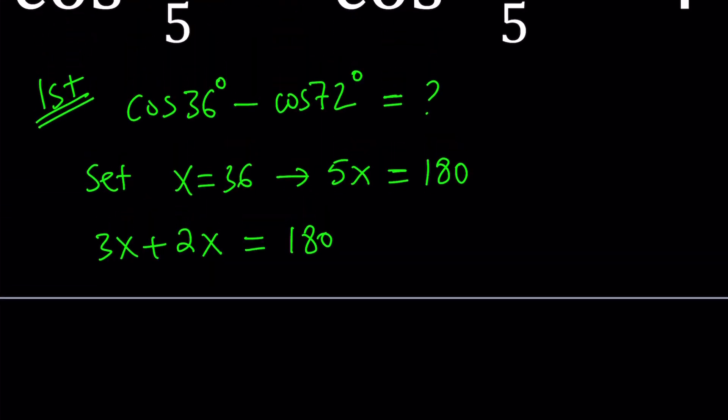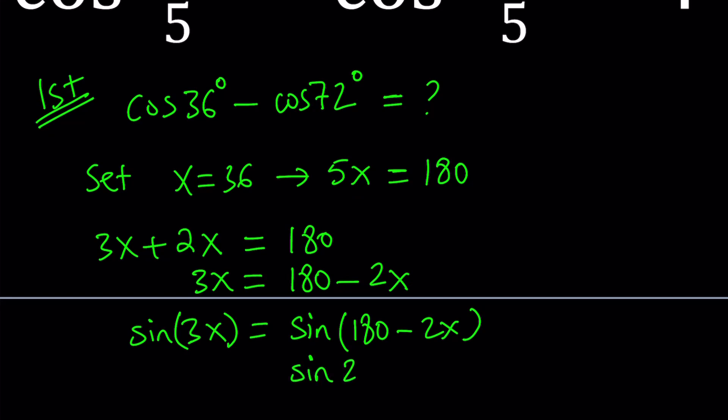I want to go ahead and isolate one of these. How about getting the 3x by itself? Subtract 2x, and we get 3x = 180 - 2x. Obviously, our goal is to sine both sides, and then we're going to get sine of 3x equals sine of 180 minus 2x. Because if you have two angles that are supplementary, their sum is 180 degrees, then their sines are equal.